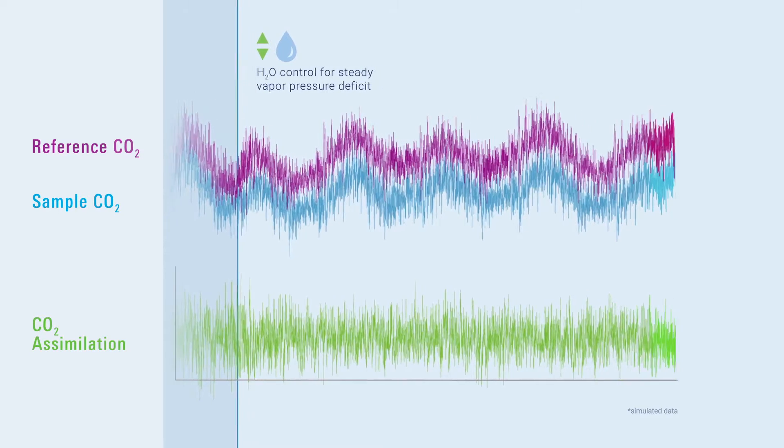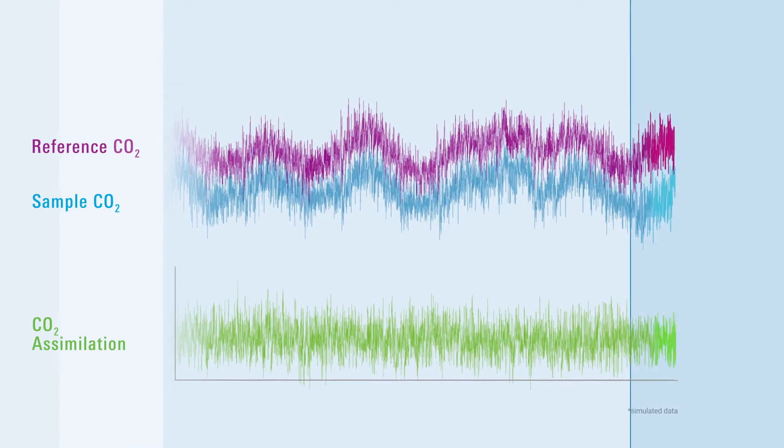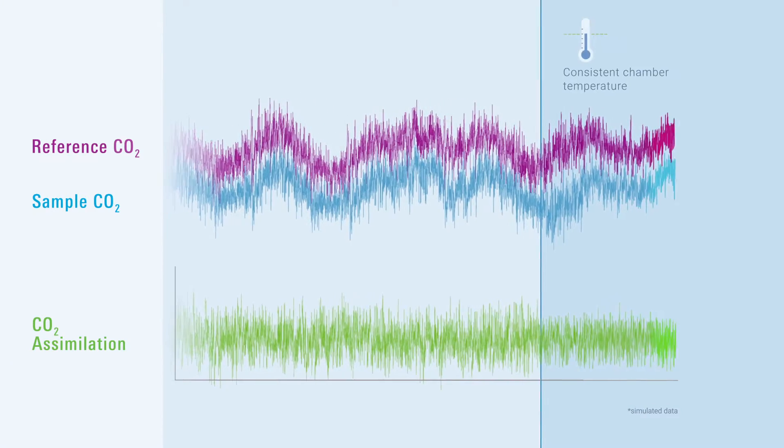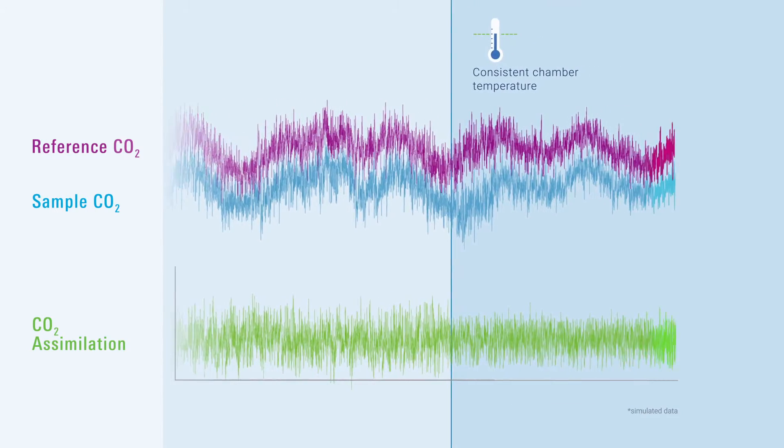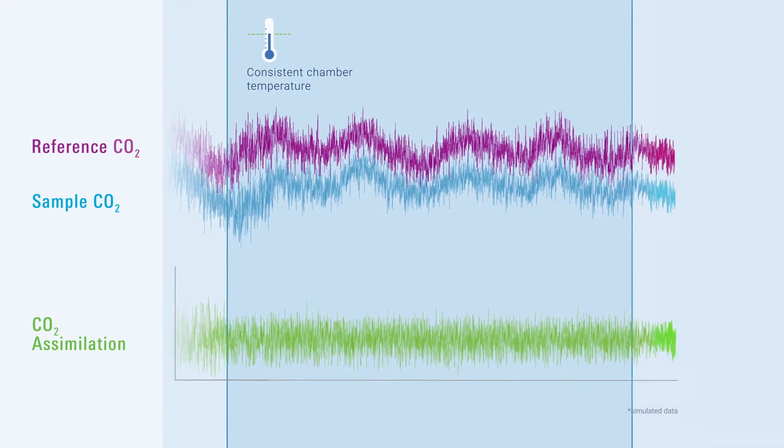This ensures that the leaf has more consistent stomatal conductance over the course of a measurement. Chamber temperature is held constant, within one-tenth of a degree Celsius, from the moment it stabilizes to the end of a measurement.